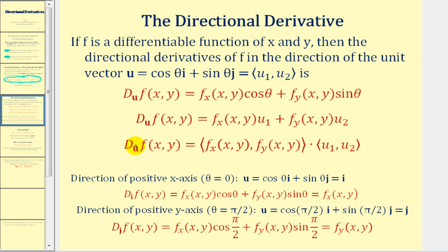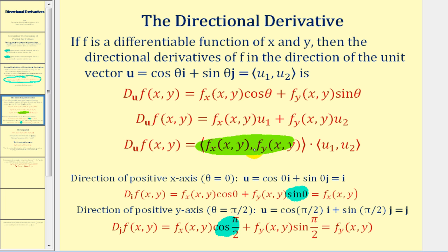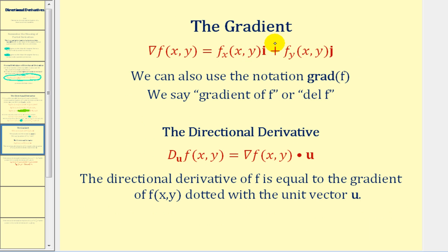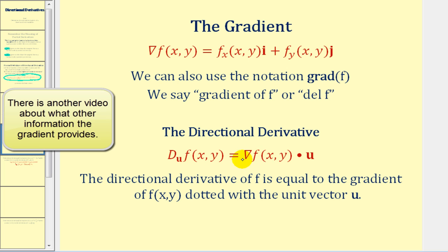Yet another way to express the directional derivative is to form a vector using the partial derivatives and dot it with the component form of the unit vector. This vector formed by the partial derivatives has a special name — it's called the gradient. The gradient of f is the vector whose x and y components are the partial derivatives of f with respect to x and with respect to y. So the directional derivative of f in the direction of u is the dot product of the gradient of f and the unit vector pointing in the specified direction.